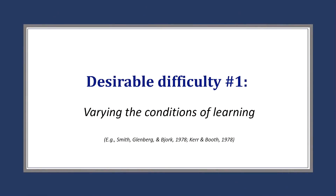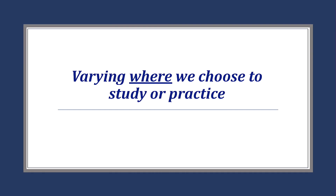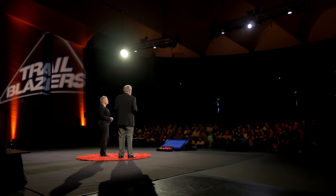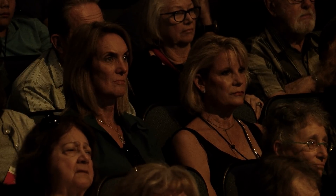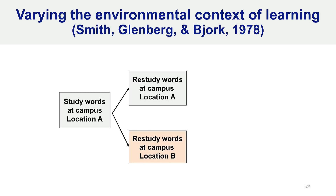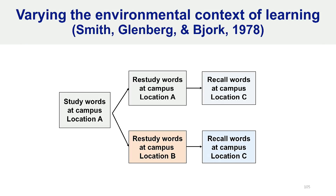There are four such difficulties we want to discuss today. The first is varying the conditions of practice rather than keeping them constant and predictable. One thing we can vary is where we choose to study. In research carried out at the University of Michigan, two groups of students each studied a long list of words and then three hours later restudied the words. What differed between the groups is whether they came back to the same place to restudy the words or to a new place on the Michigan campus. Then three hours later, they were brought to a new location and asked to recall the words. The group that studied in two different locations remembered significantly more words than the students who studied in the same place both times.